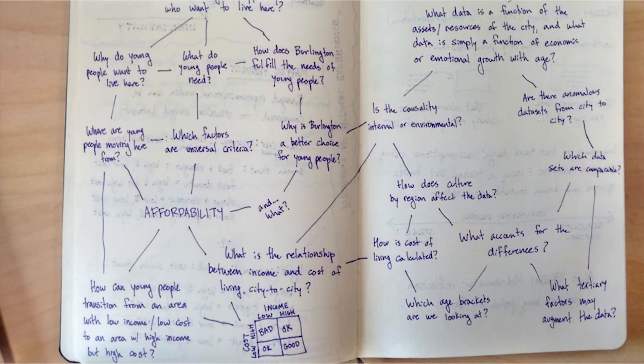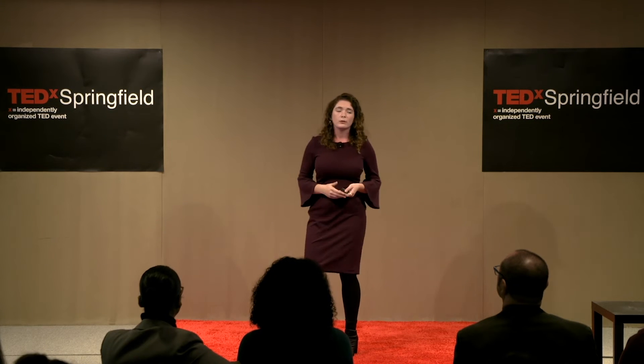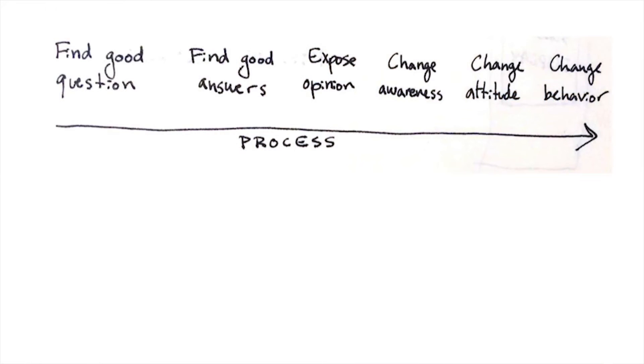But then we started thinking — is the most affordable place really the best place to live? A place with high incomes and low cost of living may have low cost of living because the only food available is fast food. So we started asking other questions: what about walkability? What about the music scene? What about green spaces? Originally we thought we'd find an answer, share it with others, raise awareness about livability, change people's attitudes, and maybe cause more young people to move to areas they hadn't considered.